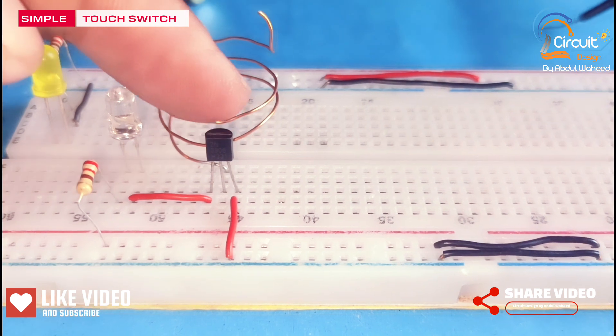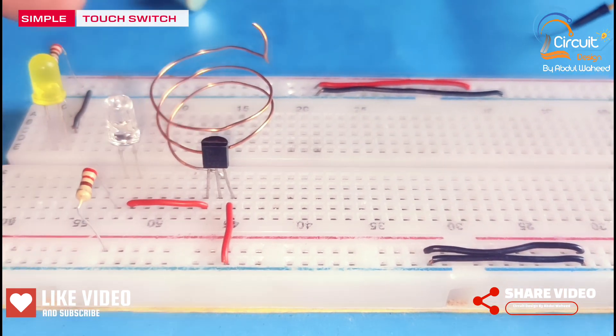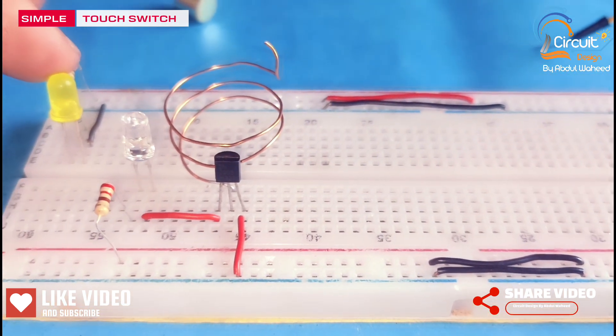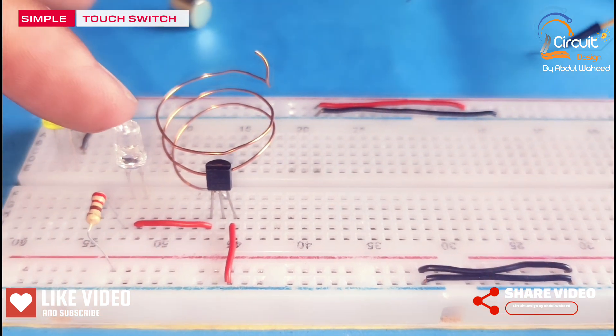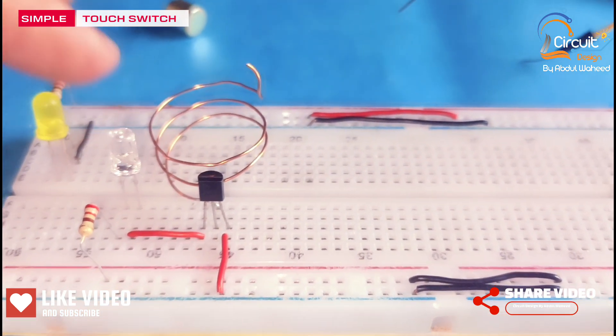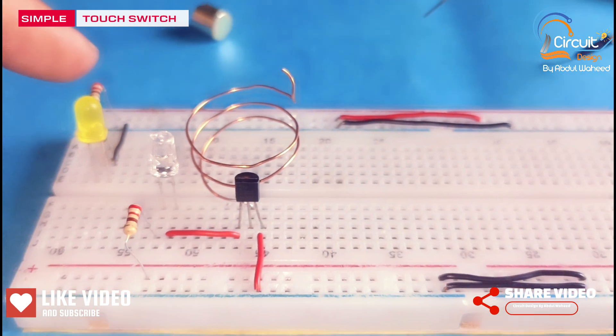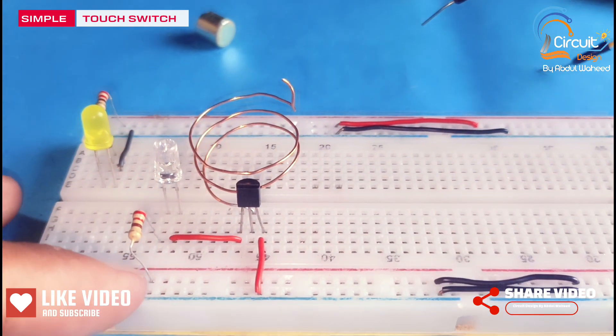This is transistor 2N3906. Here I use a yellow LED for power indication. This LED will indicate output, and I also use two resistors of value 220 ohms.